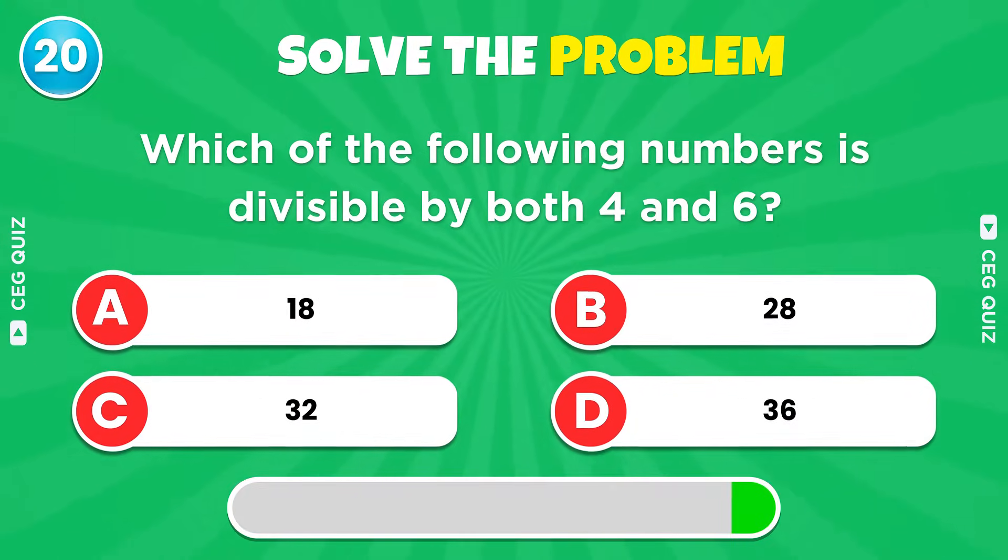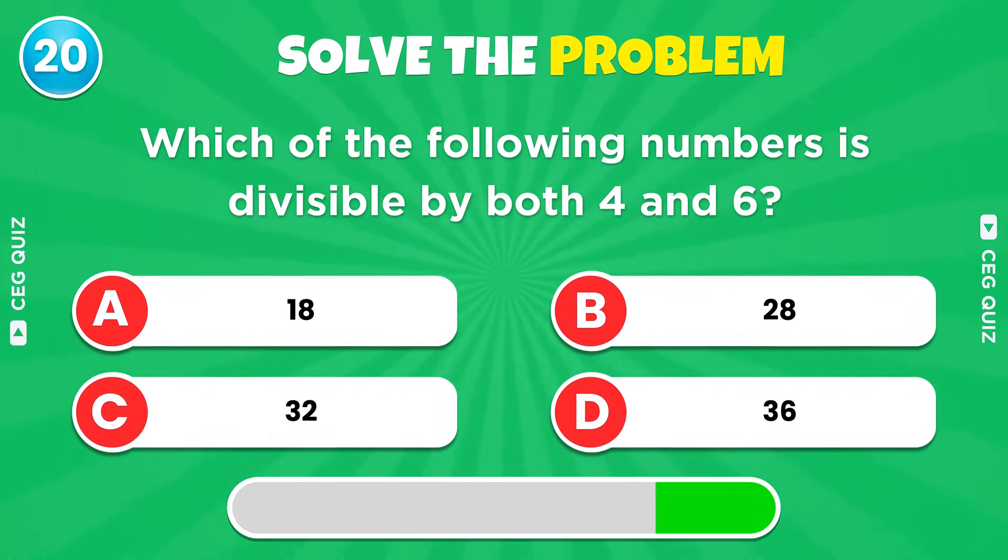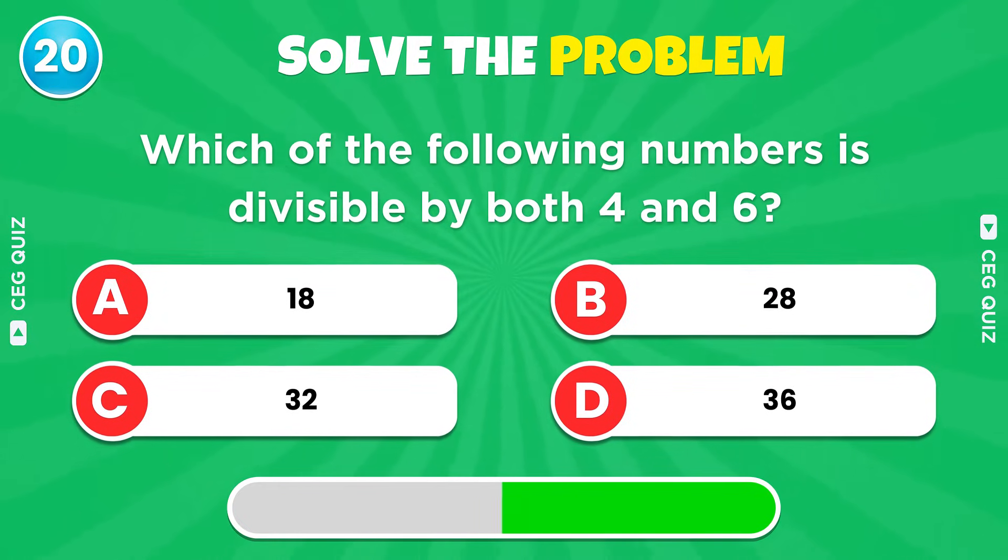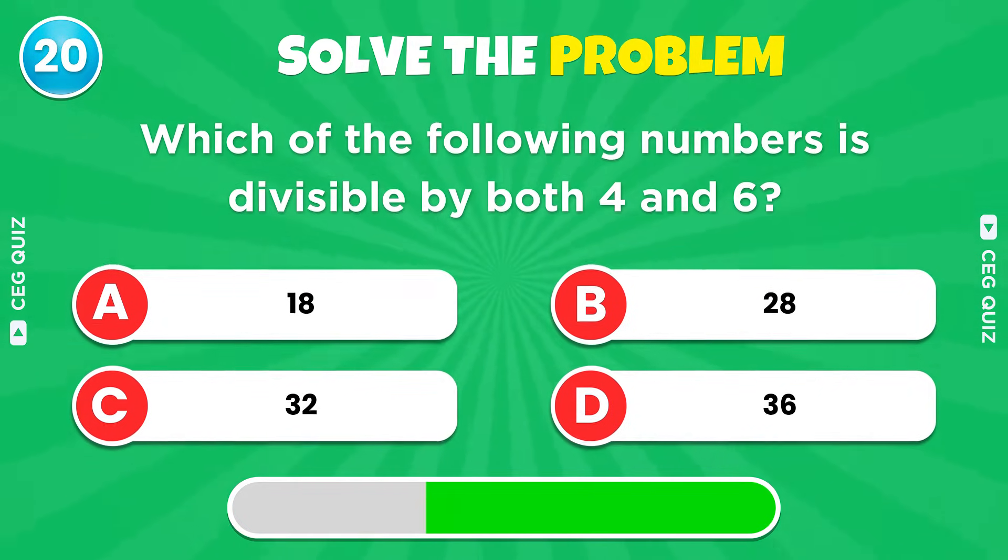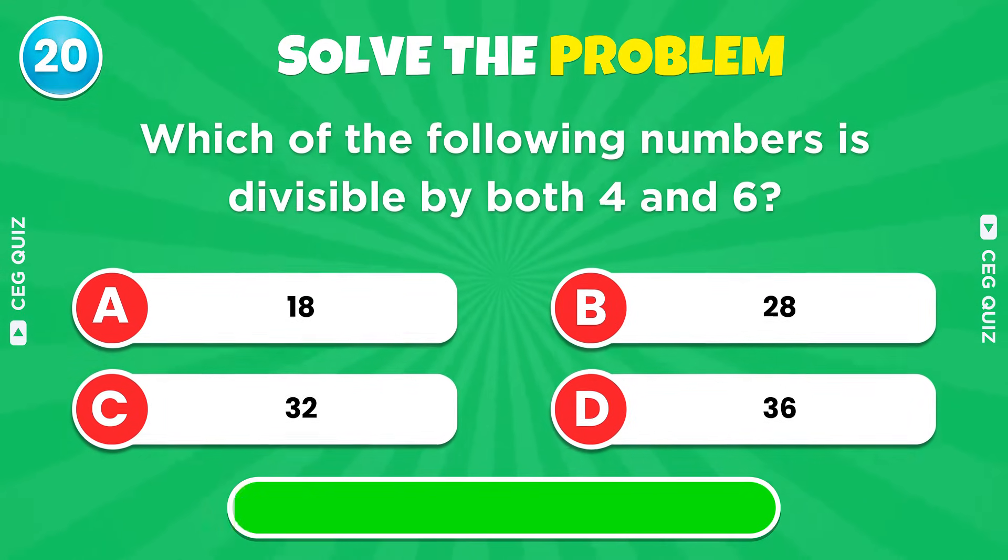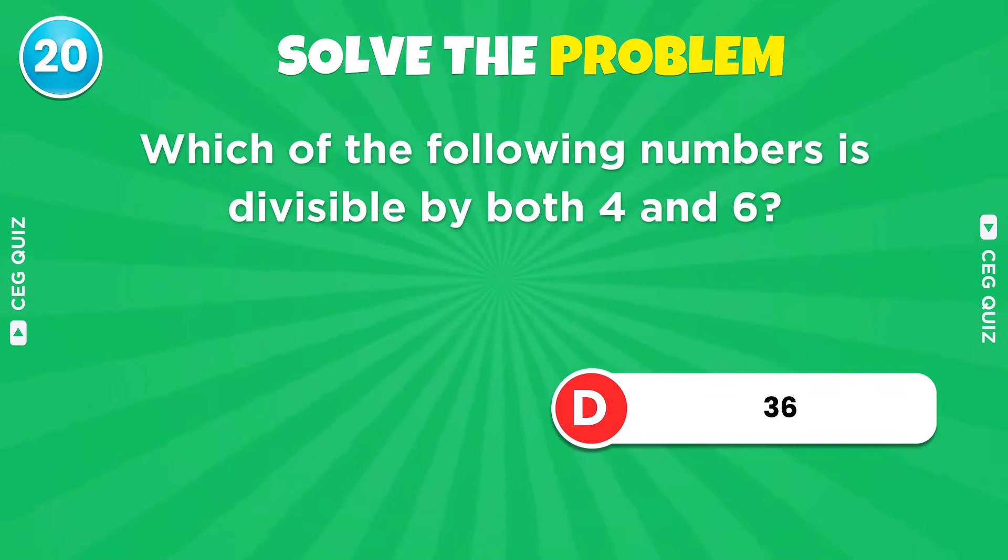Which of the following numbers is divisible by both four and six? Well done, it's 36.